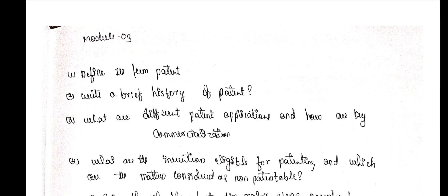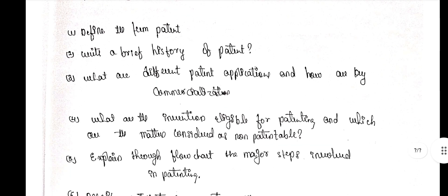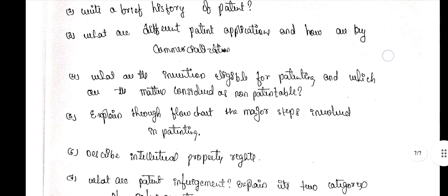Module 3. Question 1 — define the term patent. Question 2 — write a brief history of patent. Question 3 — what are different patent applications and how are they commercialized? Question 4 — what are the inventions eligible for patenting, and which are the matters considered as non-patentable? Question 5 — explain through a flowchart the major steps involved in patenting.